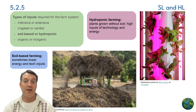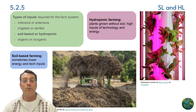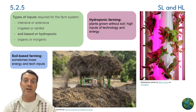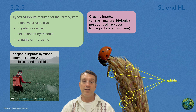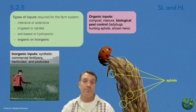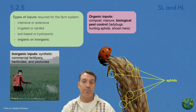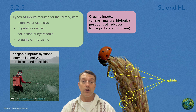Here's the contrast between soil-based and hydroponic farming. Soil-based farming often requires lower energy and technology inputs, while hydroponic systems — where plants grow without any soil — require high inputs of technology and energy, but can produce crops in controlled environments year-round. A ladybug hunting aphids is an example of biological pest control, representing organic farming approaches that use natural inputs like compost, manure, and biological pest control. In contrast, inorganic farming relies on synthetic commercial fertilizers, herbicides, and pesticides. Each of these approaches has different environmental impacts and different efficiency characteristics.